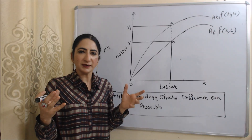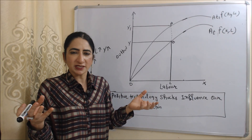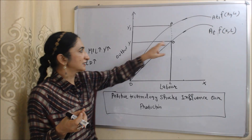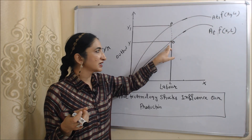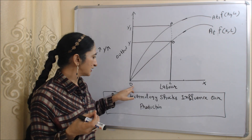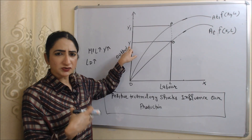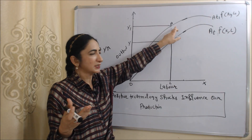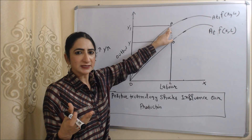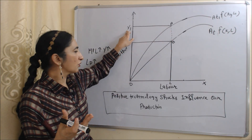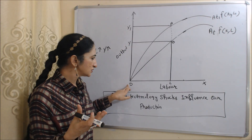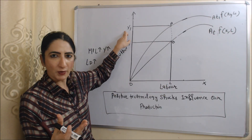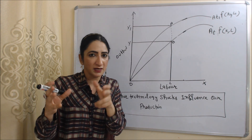With the help of this diagram we will see the effect of positive technology shocks on production. On the x-axis we have labor and on the y-axis we have output. Our initial equilibrium point is B — labor is OL and output is OY. Now suppose technology improves; the production curve shifts forward, and our new equilibrium point is A, where production increases from OY to OY1, using the same amount of labor.